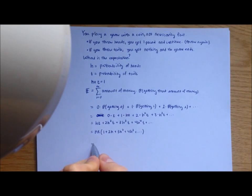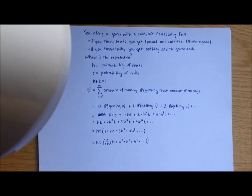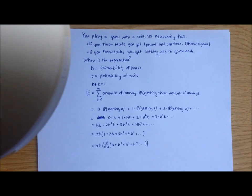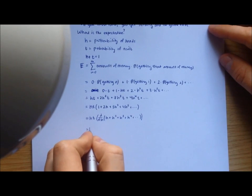So I'm going to write this in this form. Here's the derivative of h plus h squared plus h cubed plus h to the 4, and this continues forever. Now, what you have in the brackets, you can recognize this is a sum you can actually do.